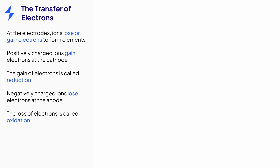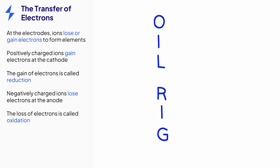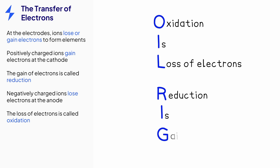To help you learn the definition of these key terms, oxidation and reduction, the mnemonic OIL RIG can be used, which stands for: Oxidation Is Loss of electrons, and Reduction Is Gain of electrons.